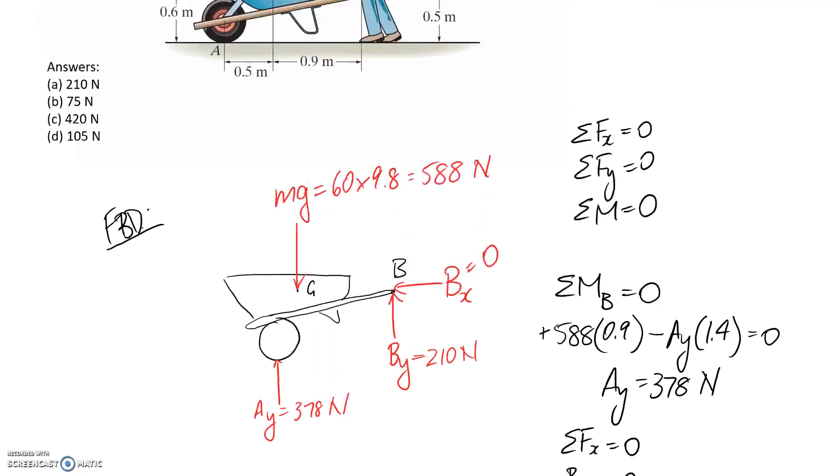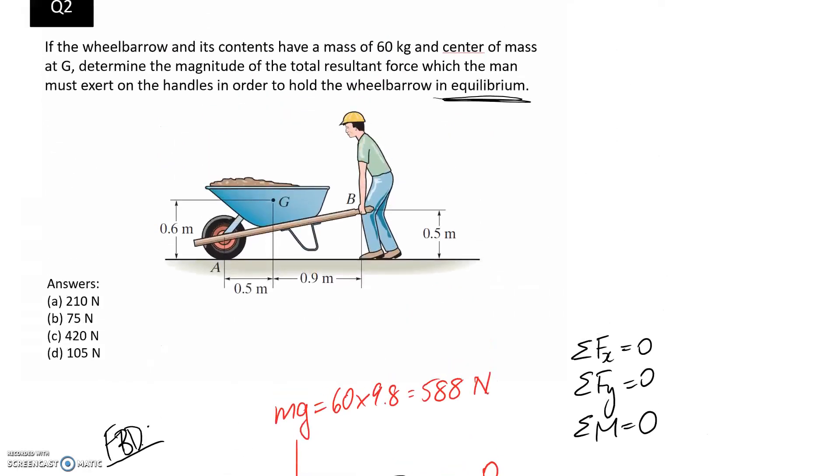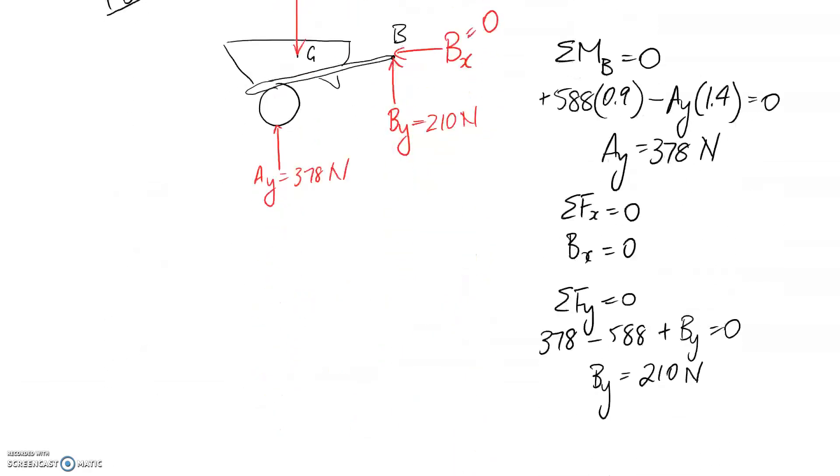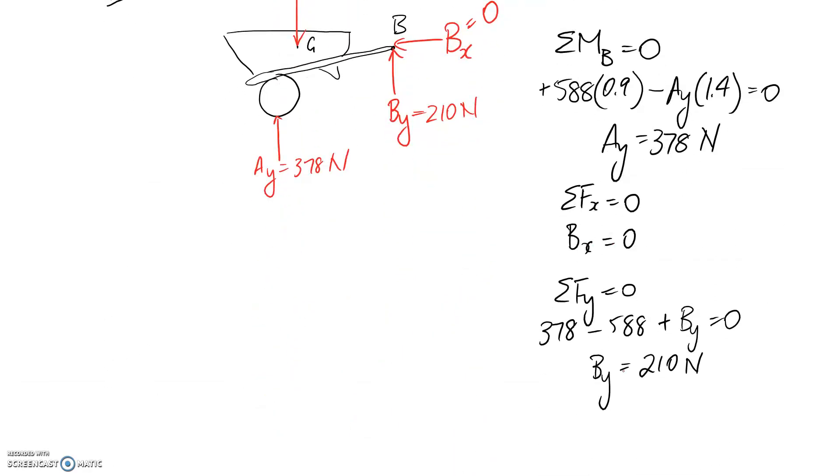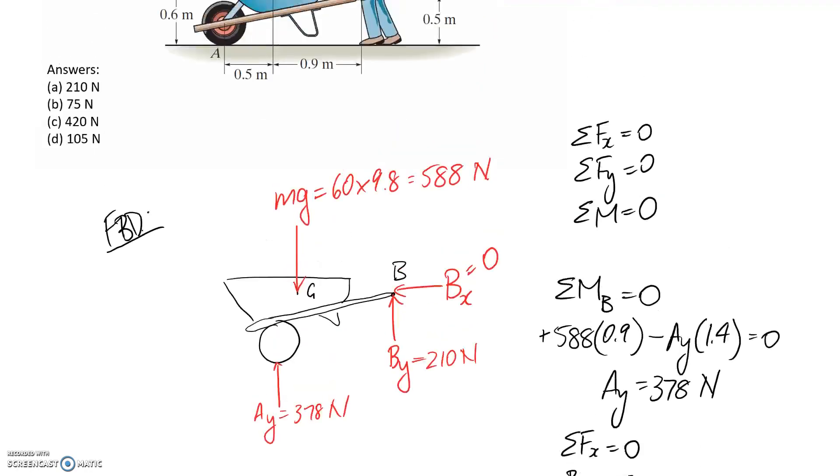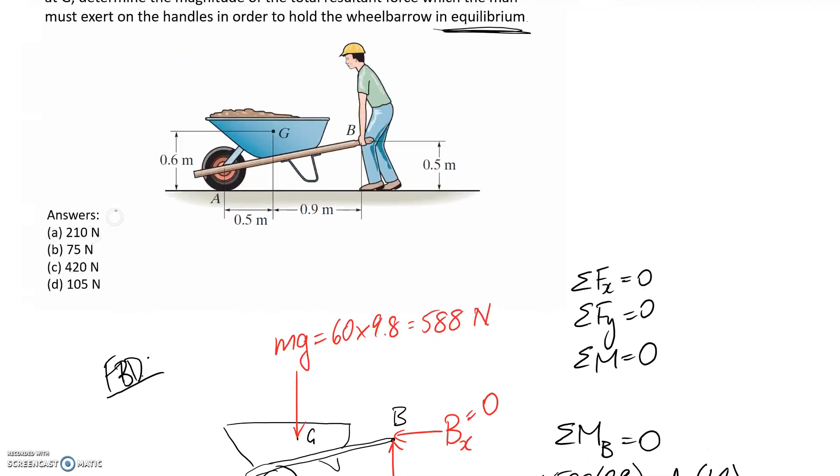So if we scroll back up, the question was asking us to determine the magnitude of the total resultant force which the man must exert on the handles. Well if we have no x component that means that the resultant is just directly equal to the y component. So it's going to be 210 newtons and if we look back up here that is indeed one of the options. So that would be the answer. So that's all there is.